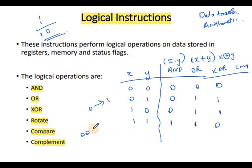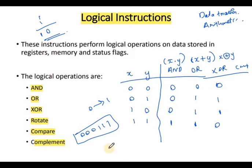Complement is familiar — the complement of 0 is 1 and the complement of 1 is 0. In 8085, we have 8 bits. So as an example, a value like 0 0 0 0 1 1 1 1 becomes 1 1 1 1 0 0 0 0 after complementing. This is the complement logical operation.